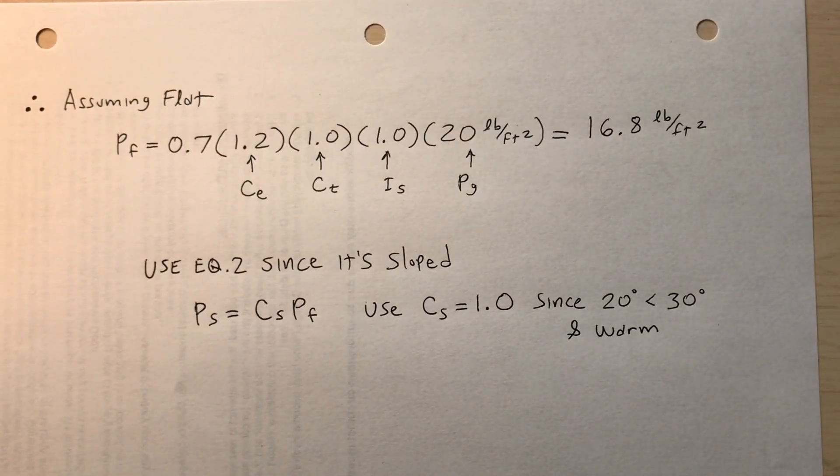Okay, so I stick everything into the formula. p_f is 0.7 times c_e times c_t times i_s times p_g. And that's 16.8 pounds per square foot.